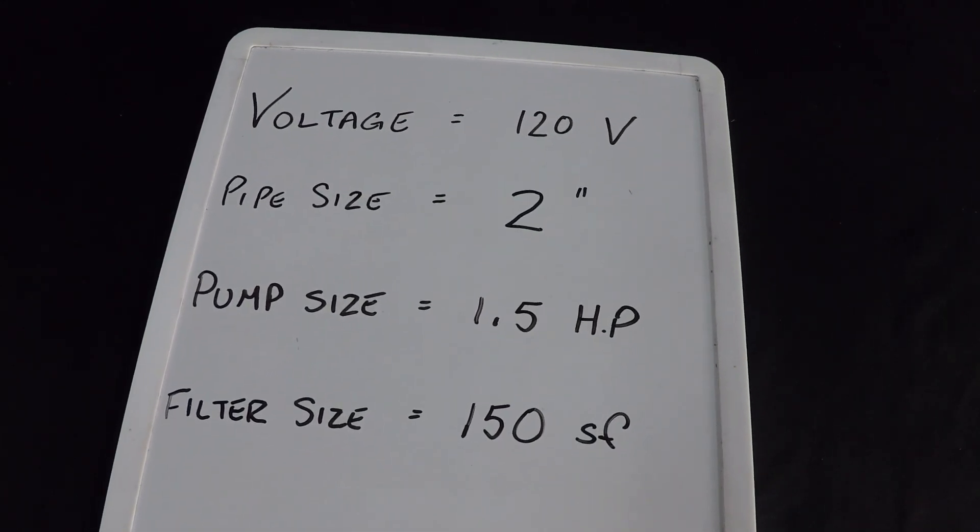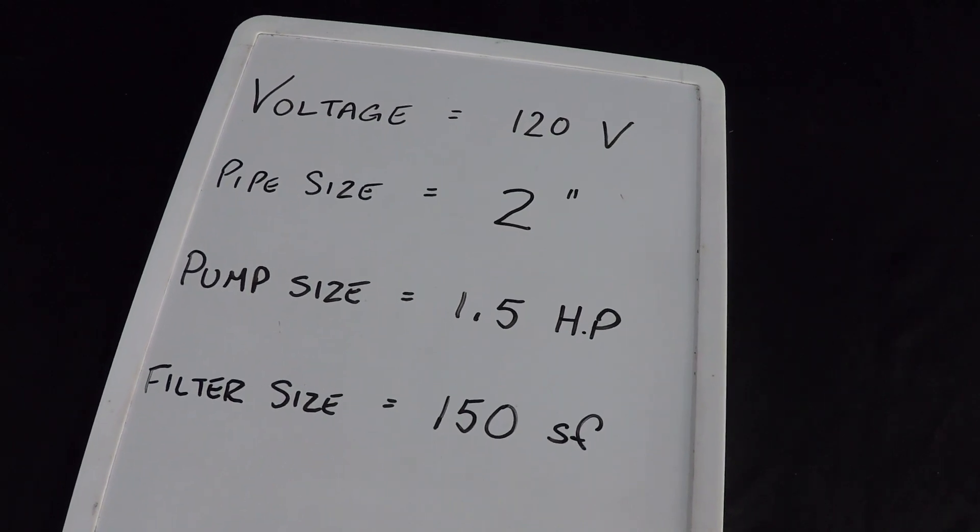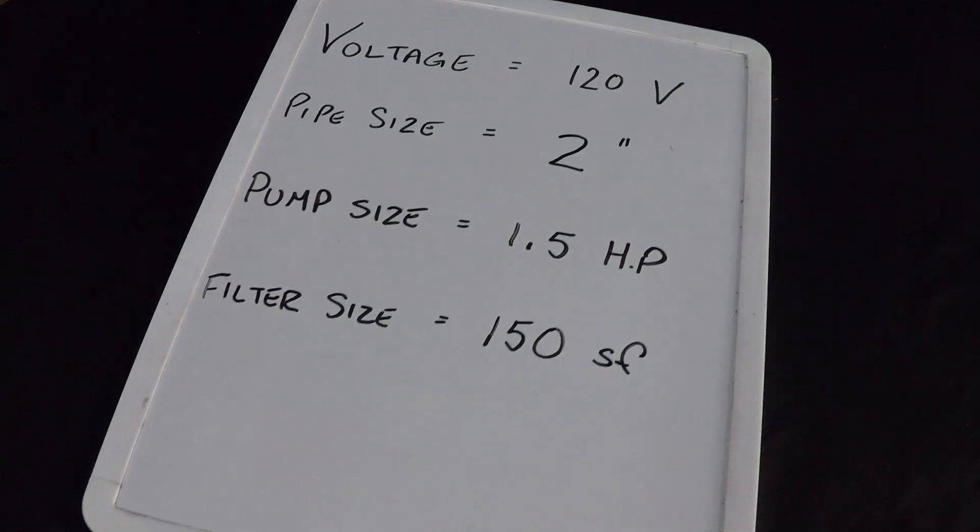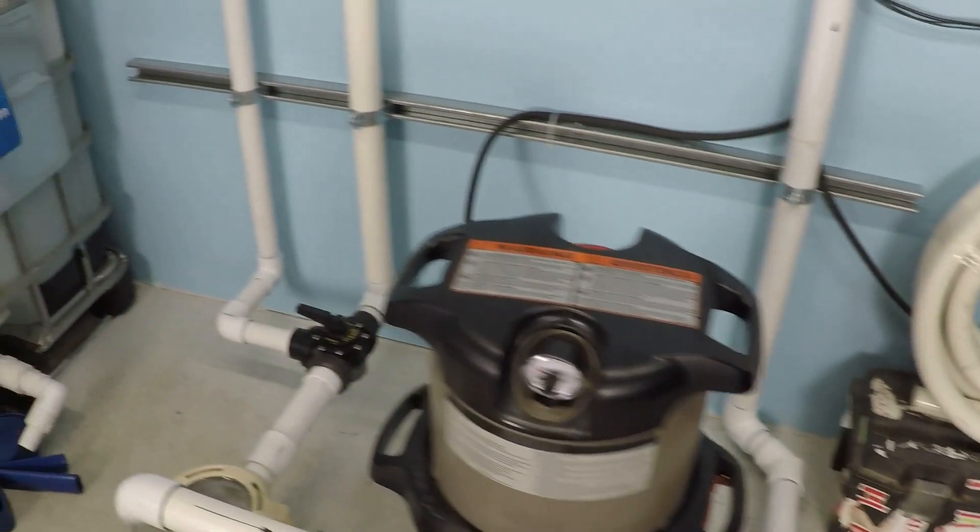Here we're going to be testing a pump system with a 120 volt power supply. Two inch is the pipe size for suction and return. The pump is a one and a half horsepower variable speed pump. Filter is 150 square feet cartridge filter. Let's get started here.